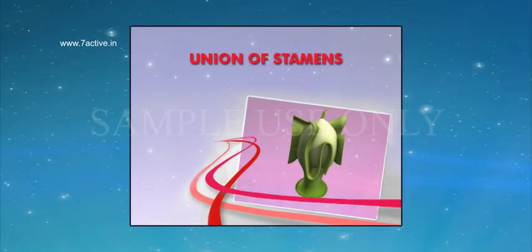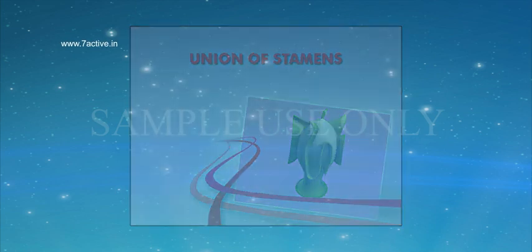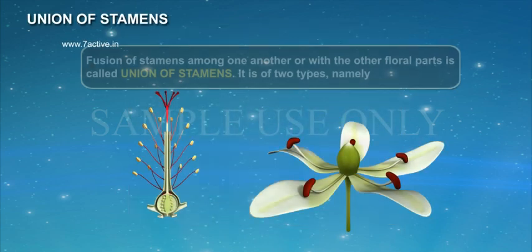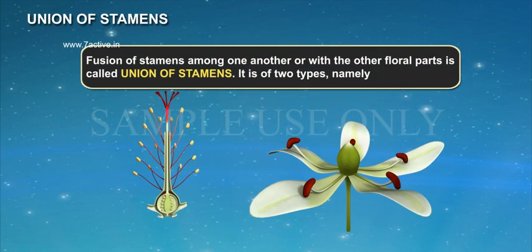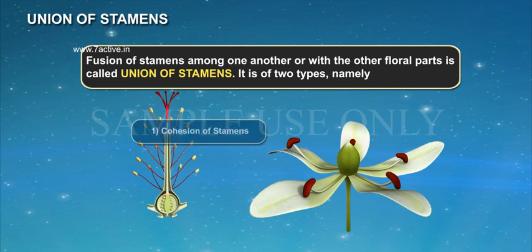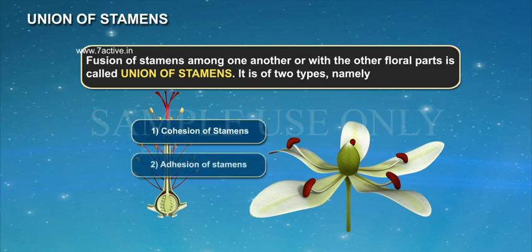Union of Stamens. Fusion of stamens among one another or with the other floral parts is called union of stamens. It is of two types: namely, one, cohesion of stamens, and two, adhesion of stamens.